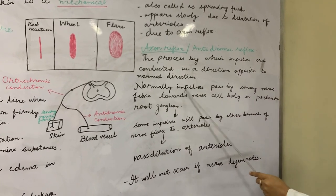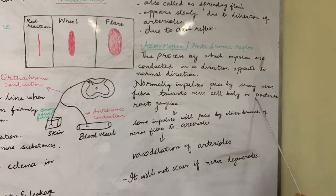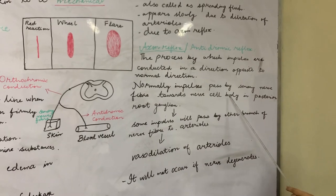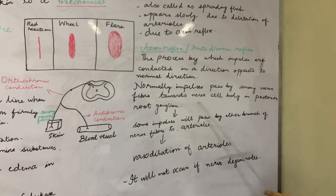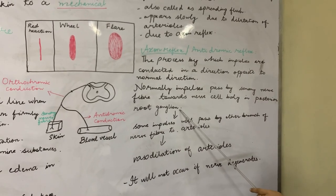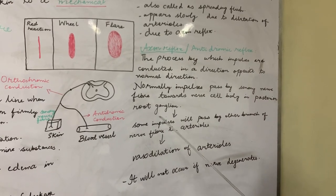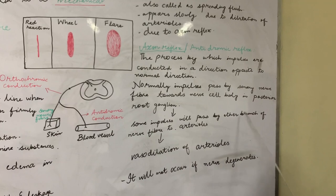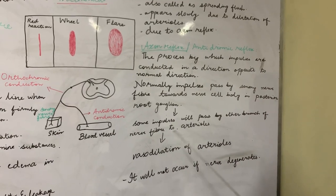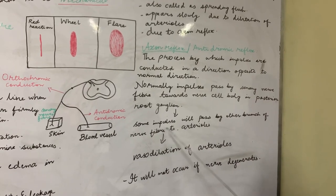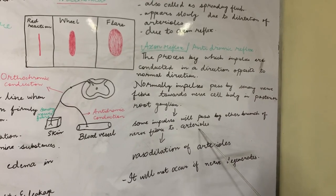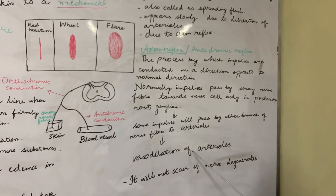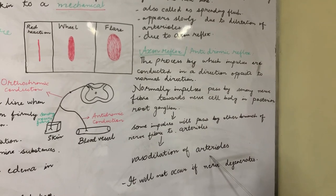Normally, impulses pass via the sensory nerve fibre towards the nerve cell body in the posterior root ganglion. But some impulses will pass by another branch of the same nerve fibre to the arterioles, resulting in vasodilation of the arterioles.